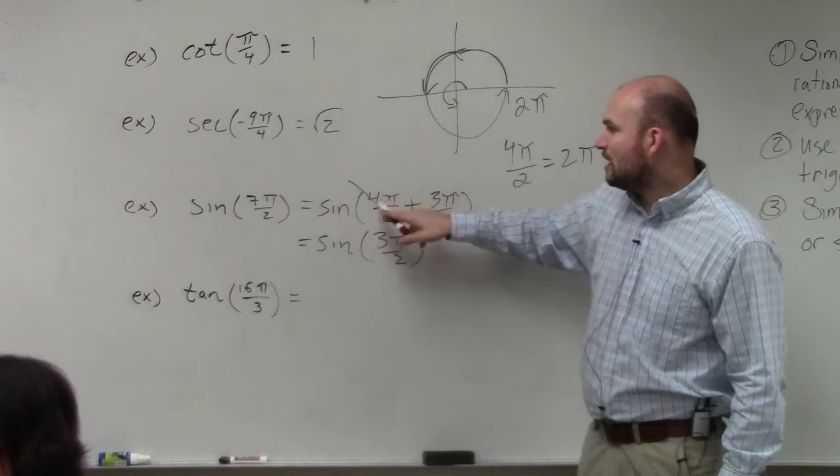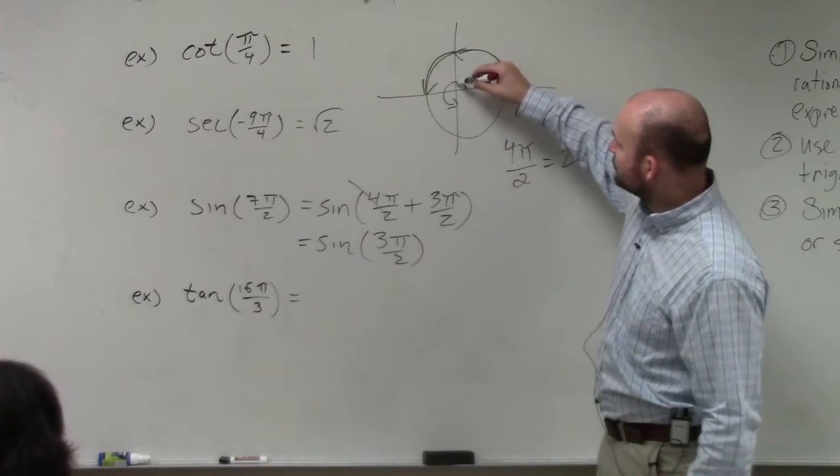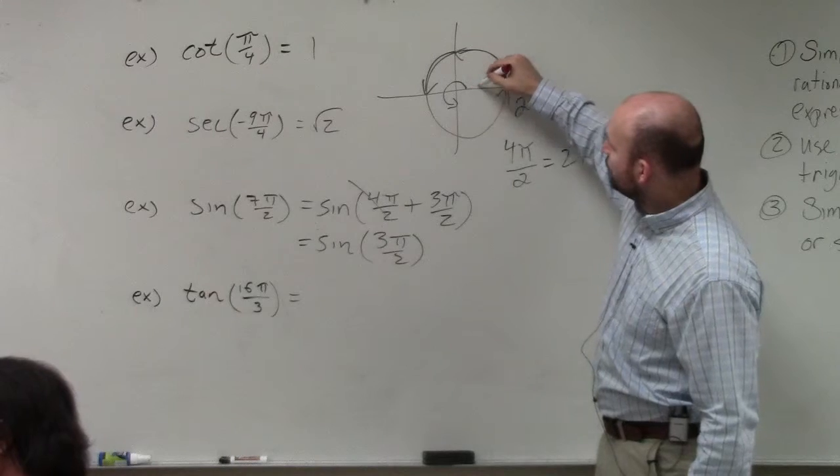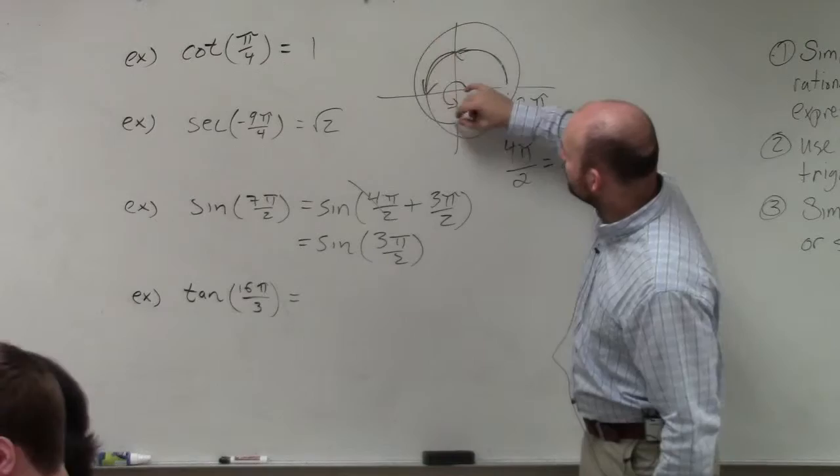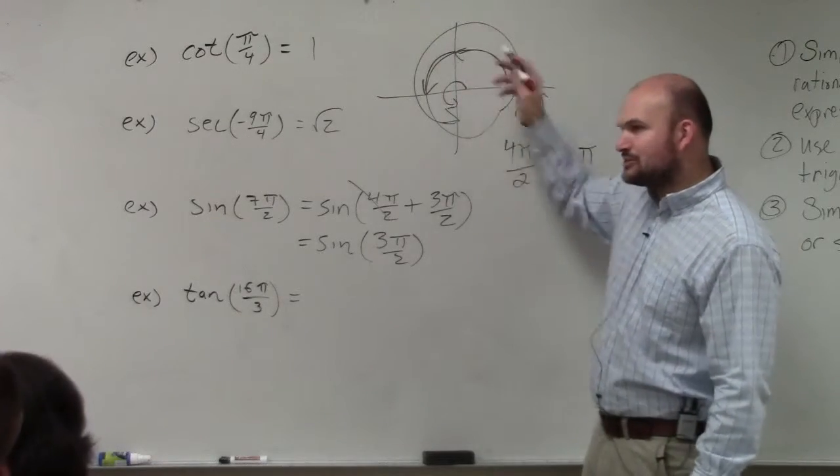Well, what if I did 7 pi over 2? 1 pi over 2, 2 pi over 2, 3 pi over 2, 4 pi over 2, 5 pi over 2, 6 pi over 2, 7 pi over 2. So what happens is, when you go around, it's doing all these extra circles.